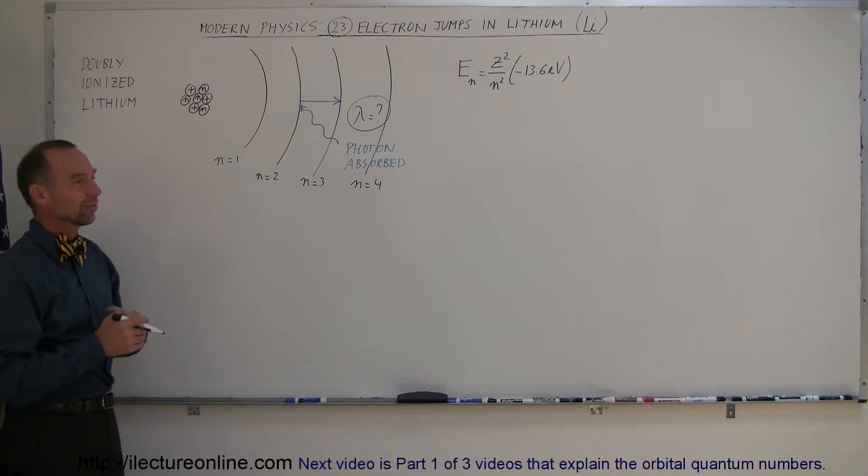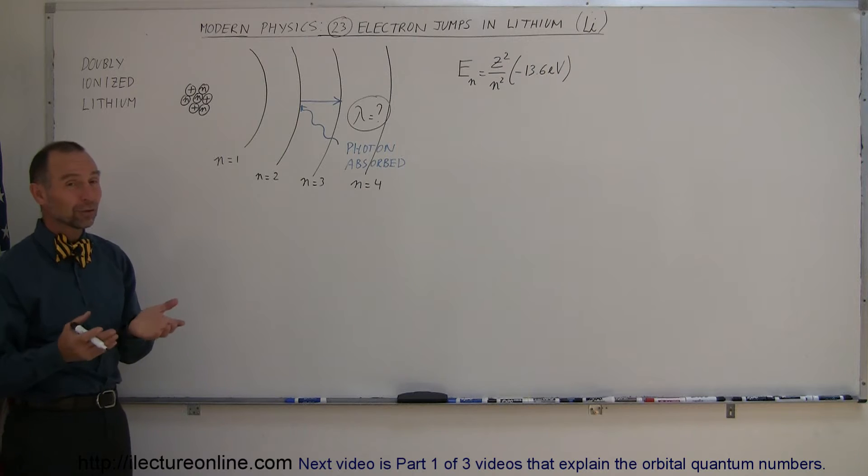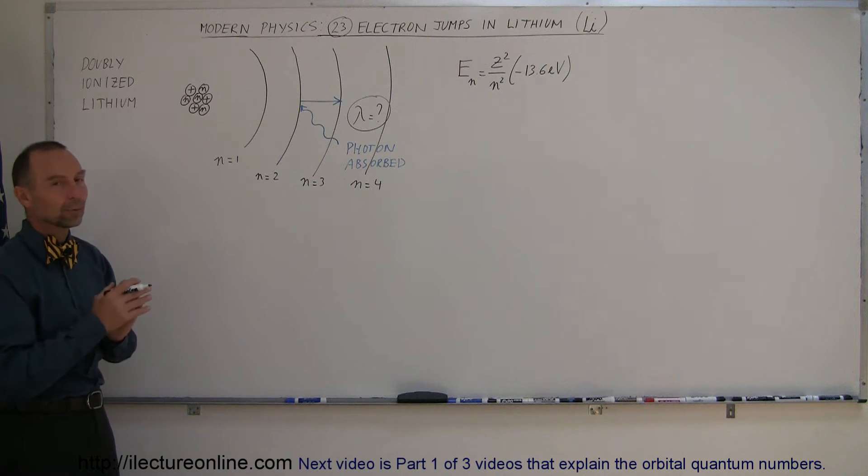The reason why we have to ionize the atoms that are more complex than hydrogen is because if we don't, the equation becomes so insanely complicated that it would be almost impossible to work out.